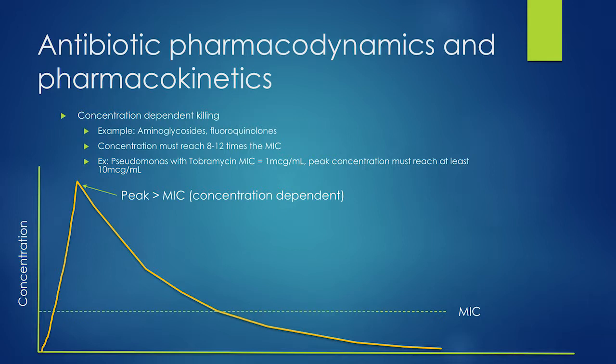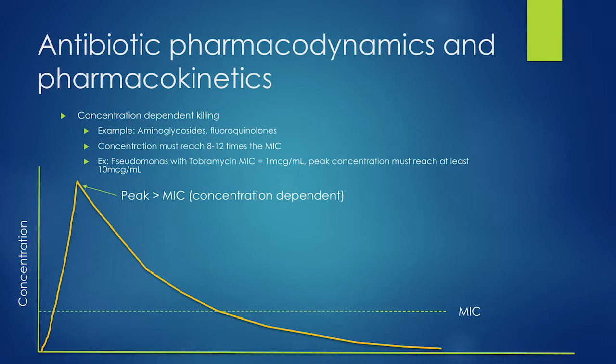Concentration-dependent killing antibiotics include aminoglycosides like tobramycin and gentamicin — you need a very high concentration because their mechanism of action involves working on the ribosomes inside the cell. You need to get a very high concentration to diffuse the antibiotic into the cell to work on ribosomes deep inside the bacterial cell. For aminoglycosides, you need a concentration about 8 to 12 times above the MIC.